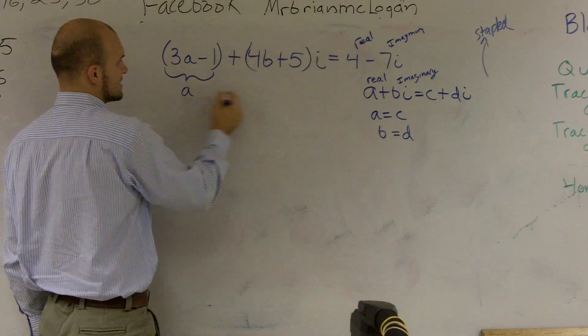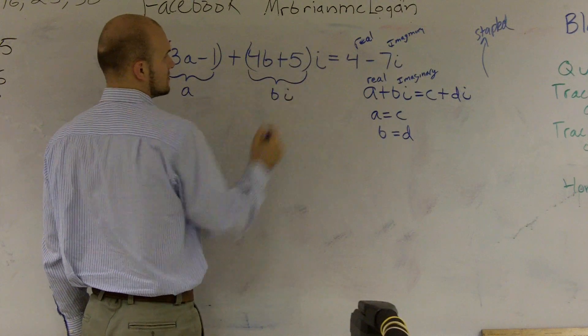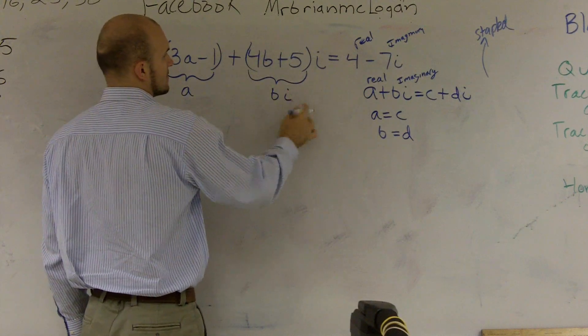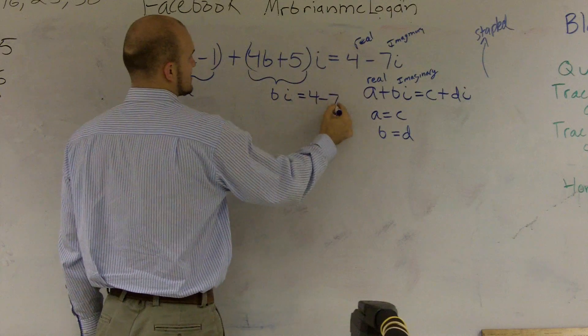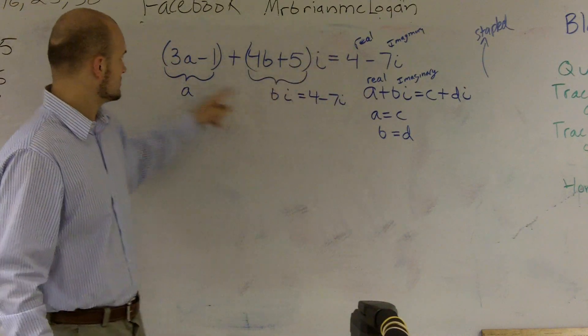So you could pretend this is like your a, that would be like your b, and that's multiplied by i, equals 4 minus 7i, right? Where 4 is your real, so this.